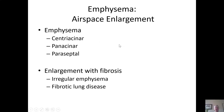Emphysema itself is classified into four types: centriacinar or centrilobular (the terms are synonymous), panacinar or panlobular (again the terms are synonymous), and paraseptal. Irregular emphysema, also called paracicatricial or scar emphysema, is usually included in the classification. Fibrotic lung disease can have airspace enlargement due to reorganization secondary to fibrosis, but this is not usually considered emphysematous destruction.